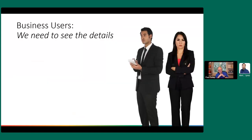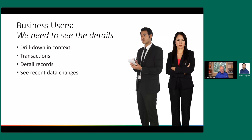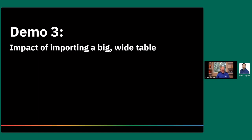But business users say: that's all well and good, but we need to see the details. I don't need to see all the details for 100 million records — I need to see the details for the records I care about: this month's sales, my territory, this date, this week, this month. So we want to be able to drill down in context, see transactions, see detail records, and also see recent data changes. If I'm working in a CRM system and just promoted an opportunity to a new stage, I want to be able to see that change minutes after I've made it. Just don't put all those wide columns in your semantic model — I'll show you some ways to work with that.